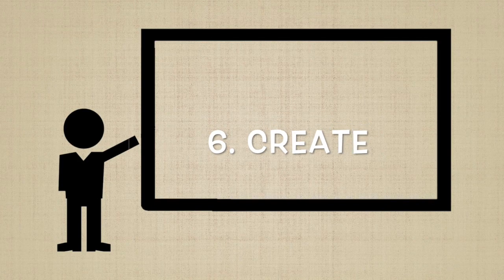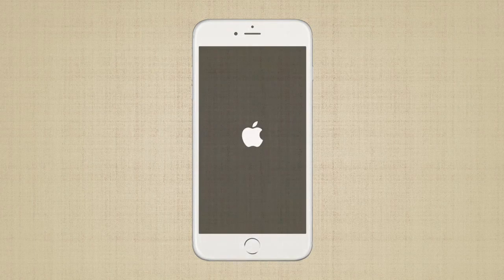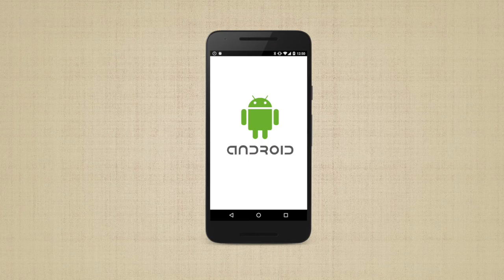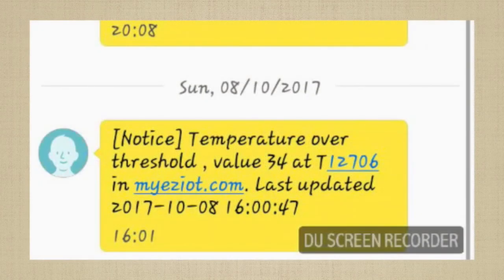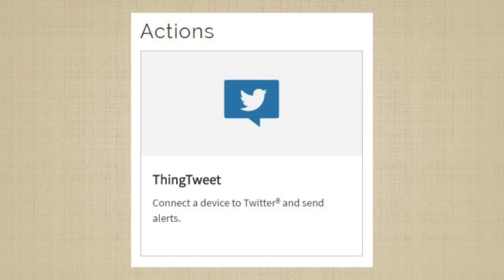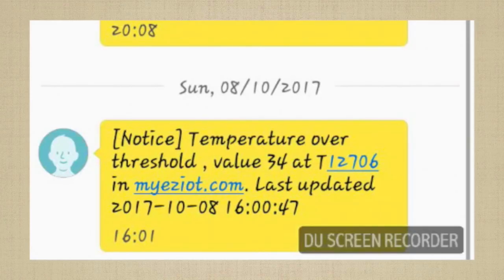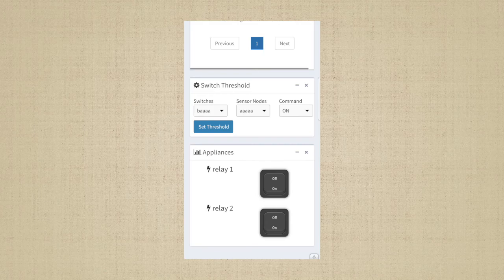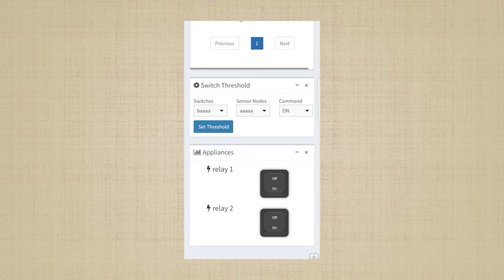Lastly, Internet of Things is not complete without creating an application. One example is a mobile application. A mobile application can have multiple features, such as alerting users for any abnormalities, as well as giving users quick access to their data from anywhere. Typically, we can use existing applications, such as Twitter or traditional SMS, to send trigger alerts directly. In some mobile applications, you can even set the threshold to trigger a specific action, such as automatically switching on relays or activating certain equipment.